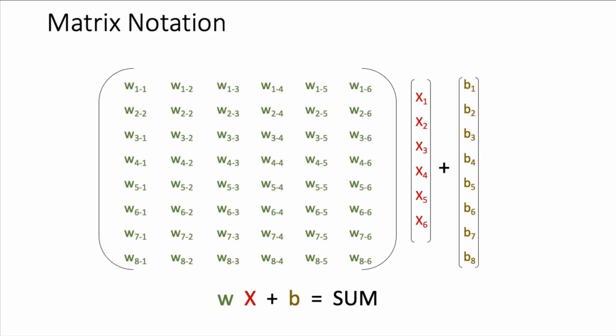So there's no crossing of rows and columns for addition and subtraction. We only cross rows and columns for multiplication. And this is what this matrix representation is telling us, that we should compute our weighted sum plus bias like this.